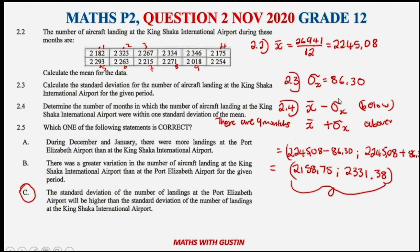Therefore Statement C should be correct: the standard deviation of landings at Port Elizabeth airport will be higher than the standard deviation at King Shaka International Airport. This is correct because there was a large variation in July where Port Elizabeth had significantly more landings. I am Gustin Mapala — this was Question 2, Grade 12 Maths Paper 2, November 2020. Please subscribe and stay tuned for more questions.